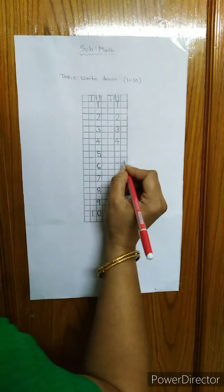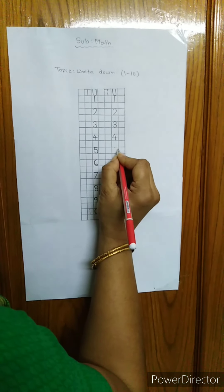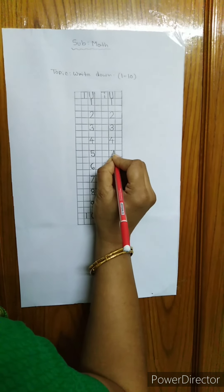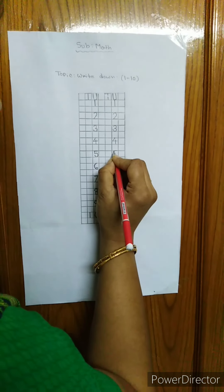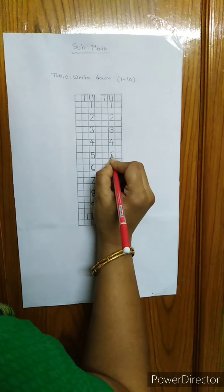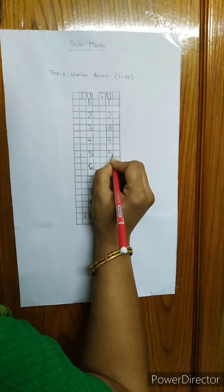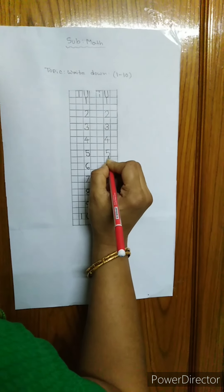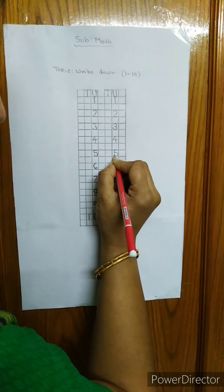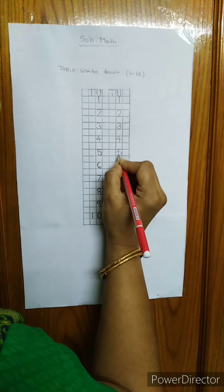Next number is 5. I will write 5. It's a small sleeping line and a small straight line and a half circle, touch the down line, and I will go up.